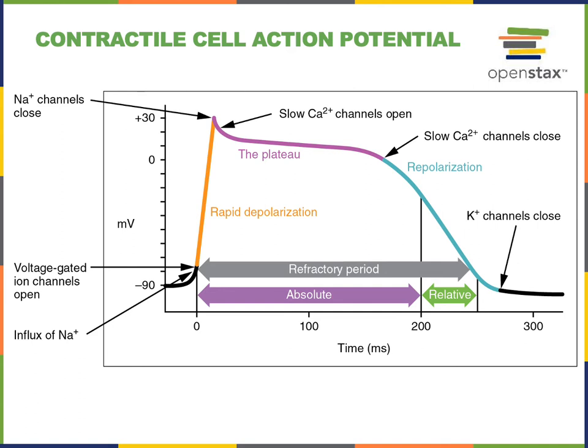This plateau phase also corresponds to the absolute refractory period. Once the L-type calcium channels close, the flow of potassium through voltage-gated potassium channels enables repolarization during the falling phase of the contractile cell action potential, shown with the blue line.